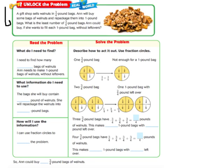Alright, so let's go ahead and get started with our unlock the problem. It says a gift shop sells walnuts in 3/4 pound bags. Ann will buy some bags of walnuts and then she's going to take the walnuts out and repackage them into 1 pound bags. What is the least number of 3/4 pound bags Ann could buy if she wants to fill each 1 pound bag without leftovers?